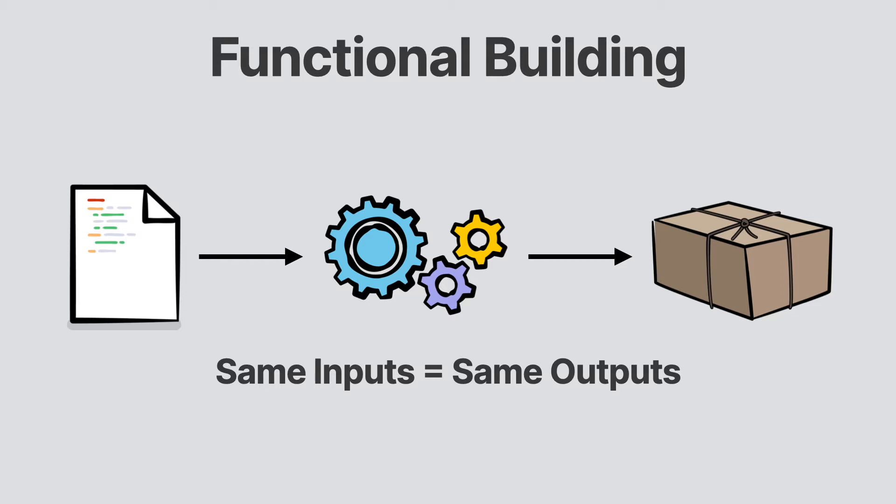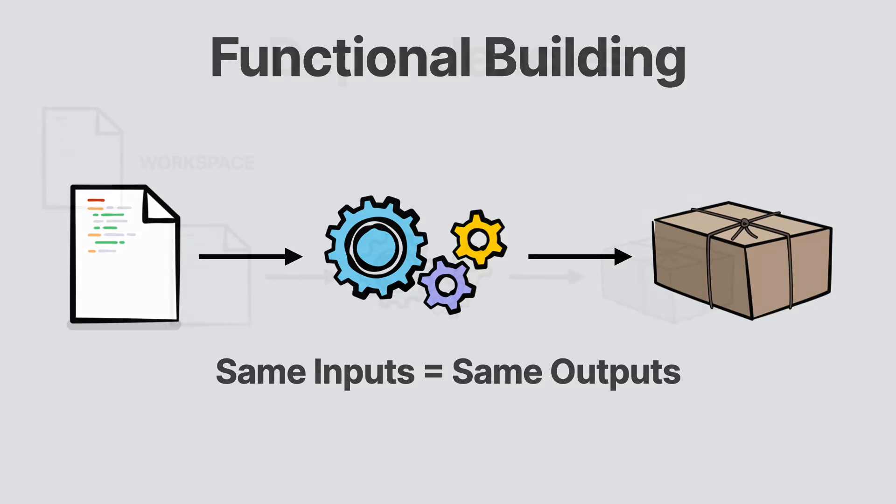Dependency management is a core part of Bazel. Remember, Bazel is designed to be a functional build system. By providing the same inputs to the build system, we always get the same outputs. This means it's critical for us to declare each dependency version. In some cases, such as including external rules, we even provide SHA values to ensure that we're dealing with correct versions.